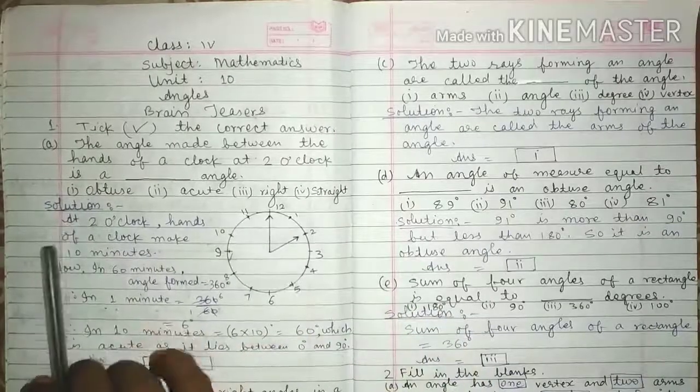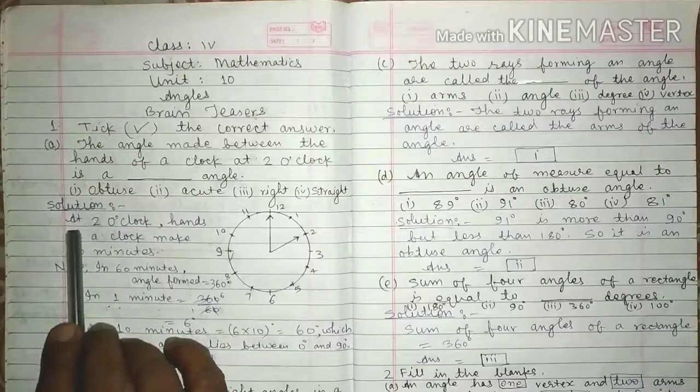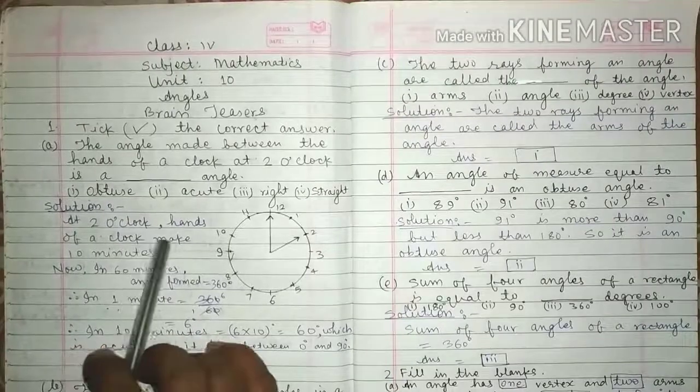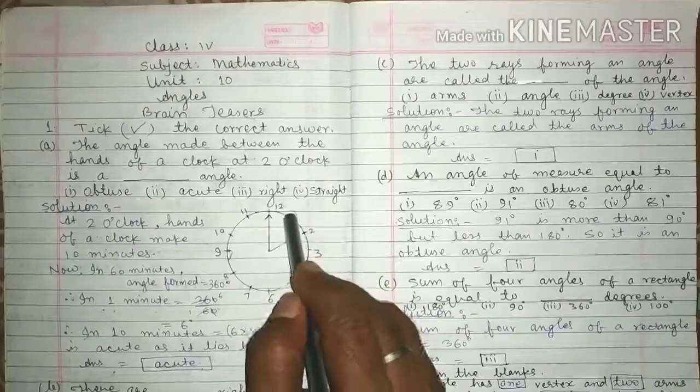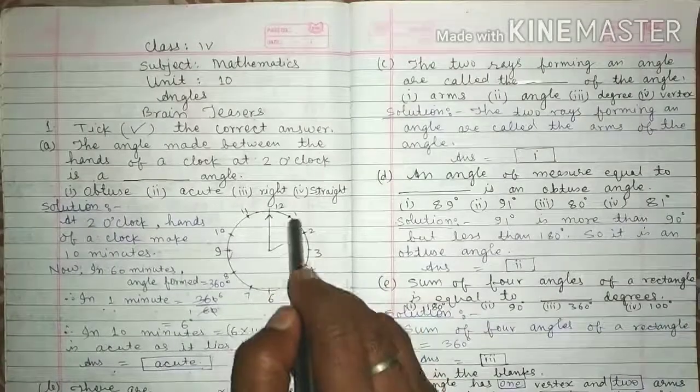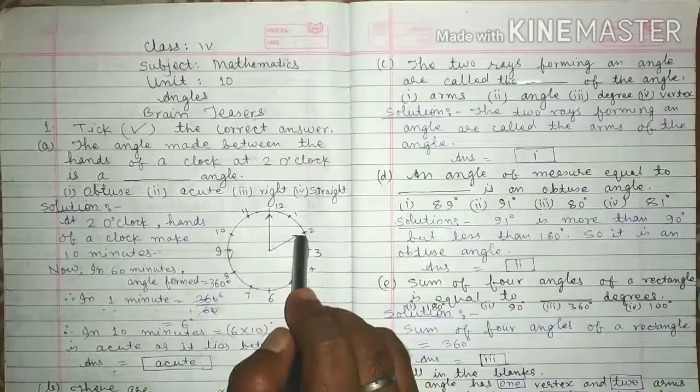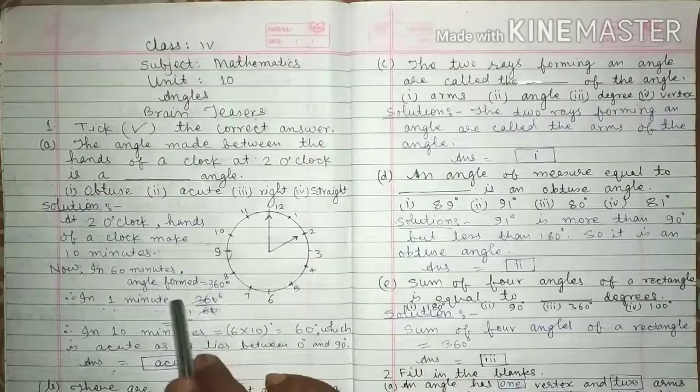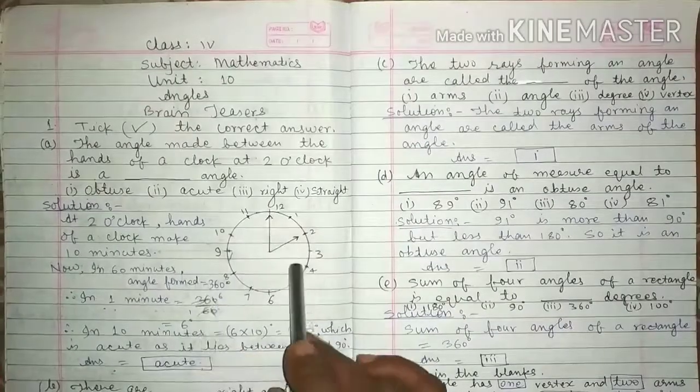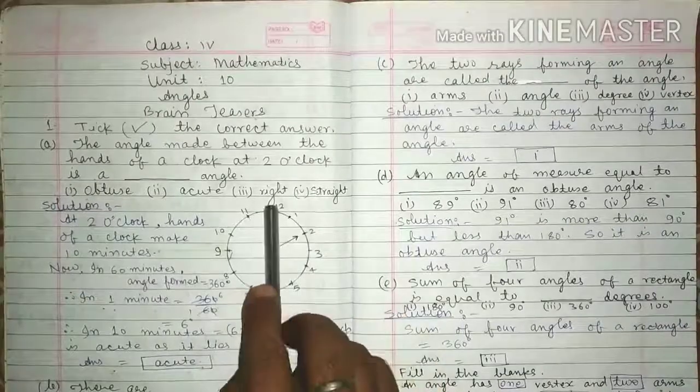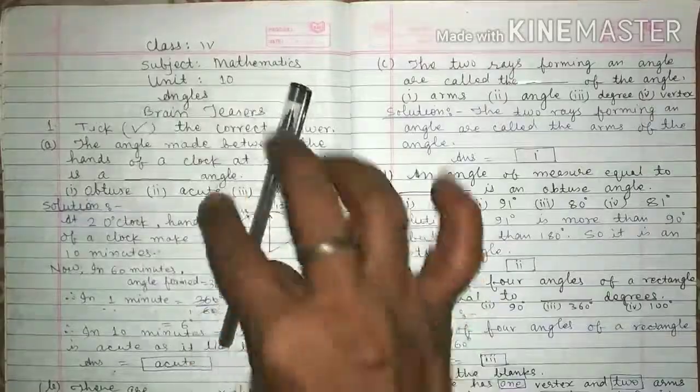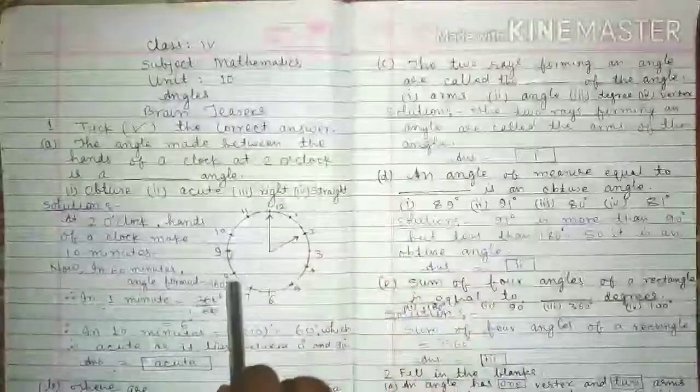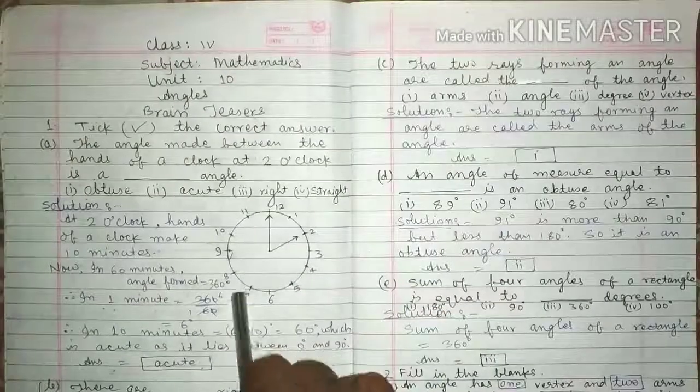For the solution, at 2 o'clock, hands of a clock make 10 minutes. This is 5 minutes and this is 5 minutes, that is 10 minutes. In 60 minutes, angle formed is equal to 360 degree. When minute hand moves one round, then it makes 360 degree. Therefore,